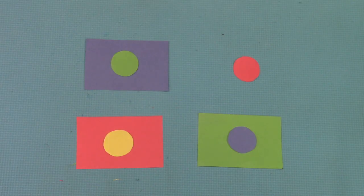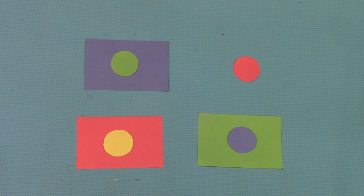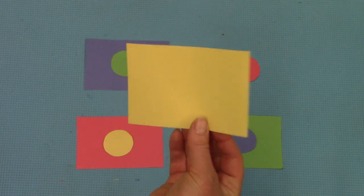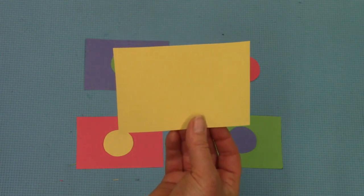All right. Close your eyes. All right. Open your eyes. What shape did I take away? Yes, it was a large yellow rectangle.